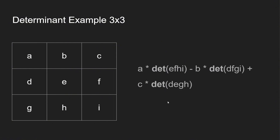The 2x2 is straightforward. For the 3x3, it's a little more difficult. First, we take A and multiply it by the determinant of the 2x2 submatrix EIFH. Then we subtract B times the determinant of DFGI — skipping the middle column. And lastly, we add C times the determinant of the remaining square.